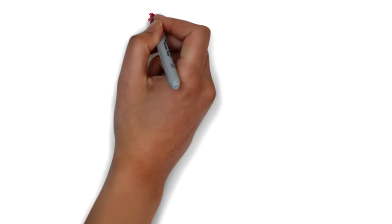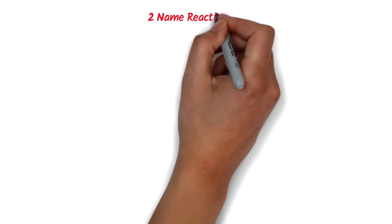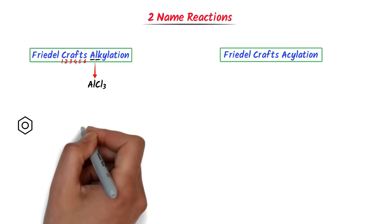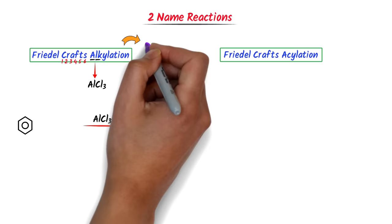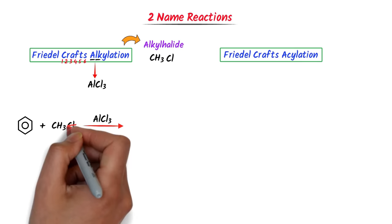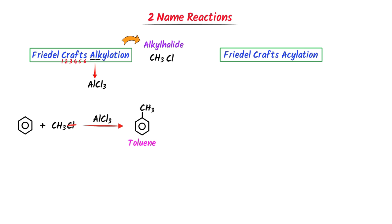Now let me teach you Friedel-Crafts alkylation and Friedel-Crafts acylation. I count the letters of 'Crafts': 1,2,3,4,5,6 — six letters remind me of the six-carbon benzene ring, so I write benzene ring. A and L in 'alkylation' remind me of AlCl3 (aluminium chloride). Alkylation means alkyl halide like CH3Cl. I cut Cl and attach CH3 to the benzene ring — I get toluene. This is Friedel-Crafts alkylation.